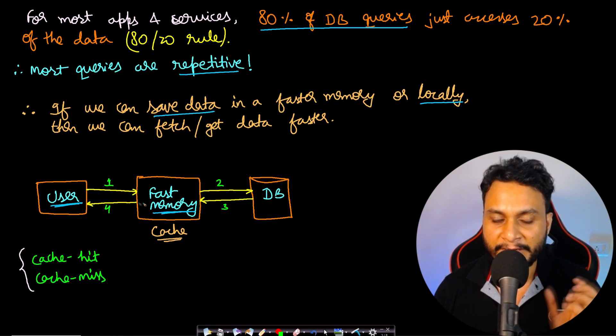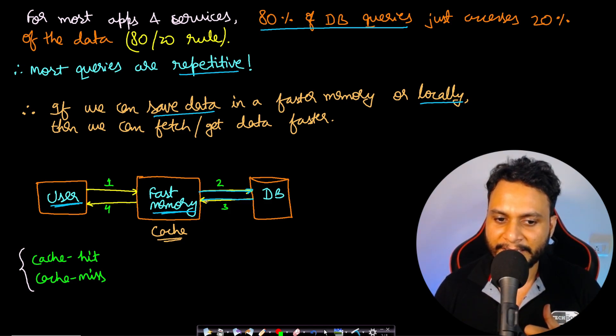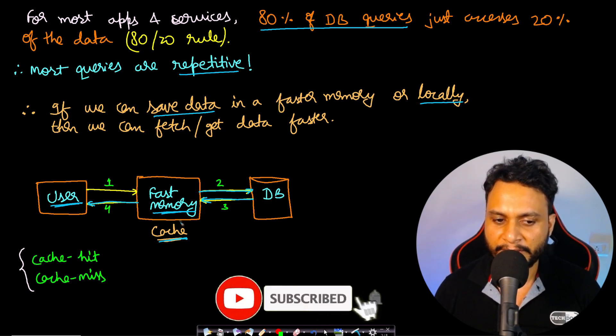Now, the fast memory, if it has the data, then it will send the response. Otherwise, if it doesn't have the data, then the fast memory will send the request to the database, get the data from the database, load it here, and again send it back to the user. This fast memory is our cache memory.